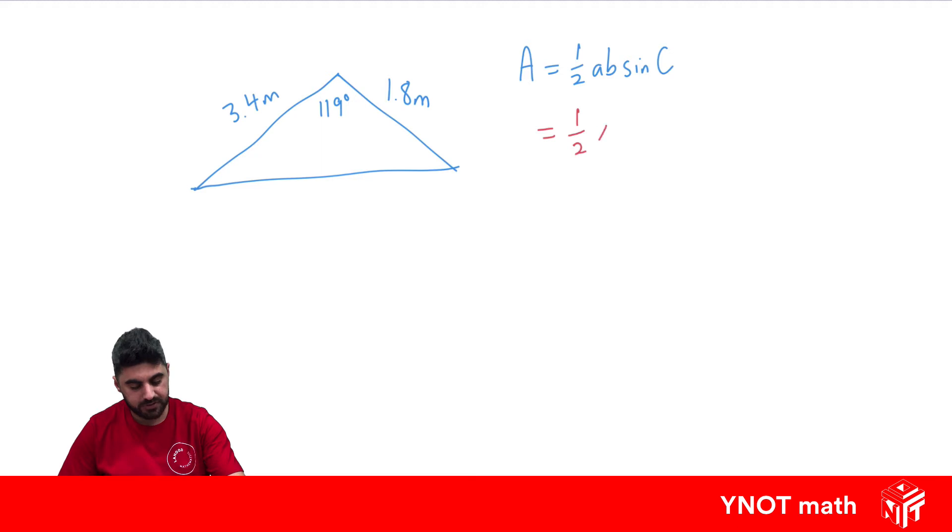So our area is going to be a half times 3.4 times 1.8 times sine of the angle in the middle of those two sides, which is 119. We can put all that in our calculator and get 2.7 meters squared to one decimal place. Don't forget we're finding area, so it's going to be units squared. Let's look at one more example.